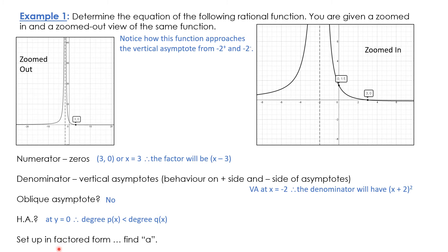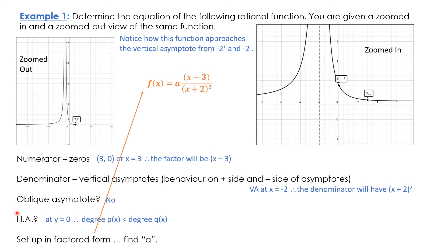So let's set this up in factored form — we're going to put all this information together. There's our numerator piece and our denominator piece. The degree of the numerator is one, the degree of the denominator is two, so that gives us the horizontal asymptote at zero. Now we just have to find A.